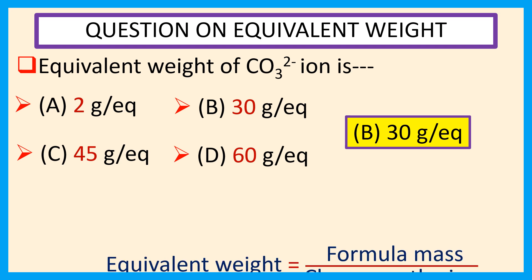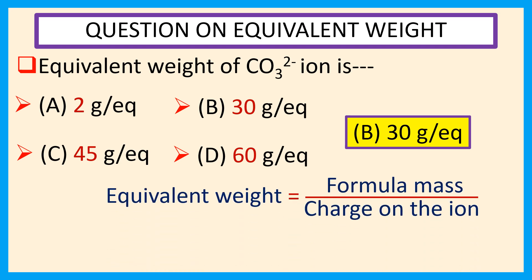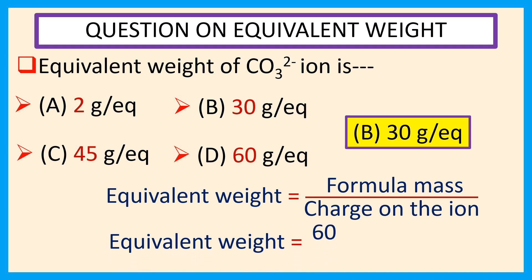We know equivalent weight is equal to formula mass divided by the charge on the ion. Therefore, equivalent weight is equal to 60 — the formula mass of carbonate ion — divided by 2, because it carries 2 negative charges, which equals 30 gram per equivalent.